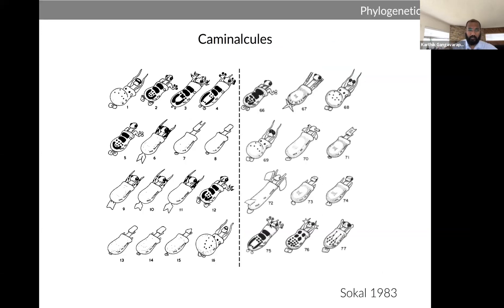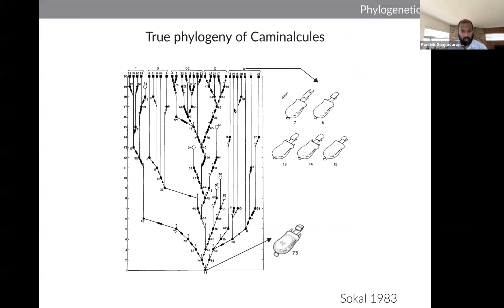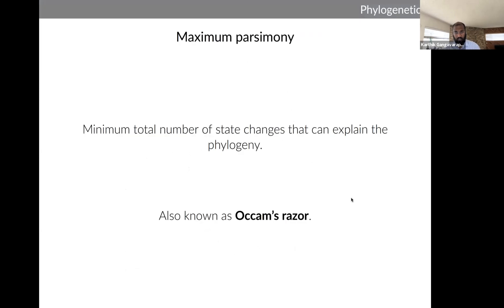The first attempts at reconstructing evolutionary history from discrete characters were done by Camin and Sokal in 1983. They created fictitious species called 'communicules' illustrating about 77 different species that belonged to this group, all part of an underlying phylogeny — for example, species 73 was the common ancestor of the entire tree. They distributed illustrations to visual biologists and asked them to recreate the phylogeny. People who did best were those who tried to minimize the number of changes required to explain the entire phylogeny — this leads to the principle of maximum parsimony, an early popular method to reconstruct evolutionary history.